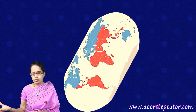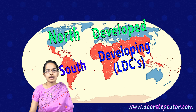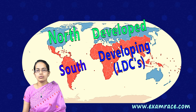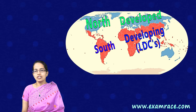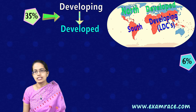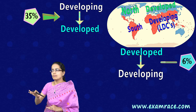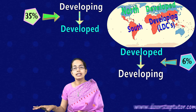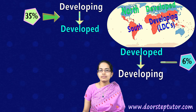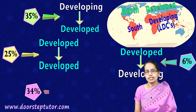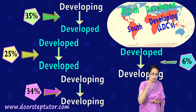If we talk about developed versus developing regions, we consider this as a north-south divide — the developed regions are called the 'north' and the developing regions are called the 'south.' Looking at migration flows: nearly 35% migration occurs from developing countries to developed countries; nearly 6% from developed to developing; nearly 25% from one developed country to another; and nearly 34% from one developing country to another.